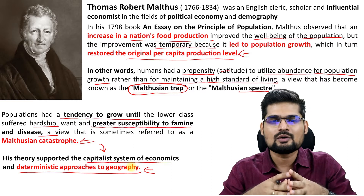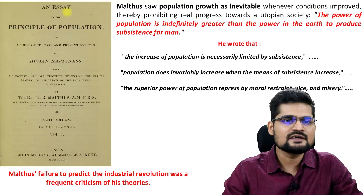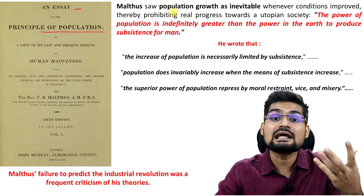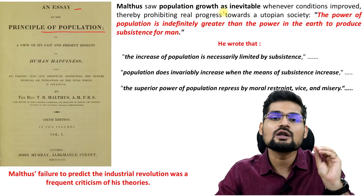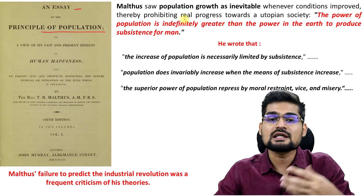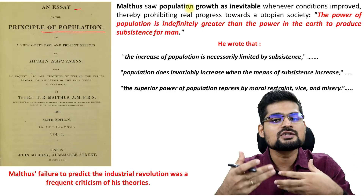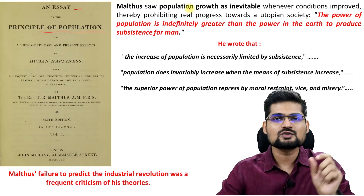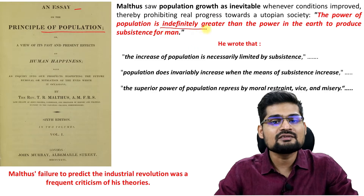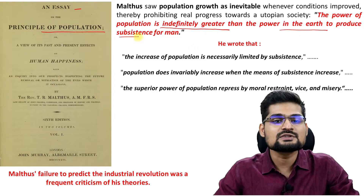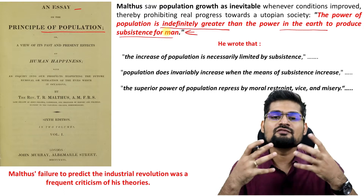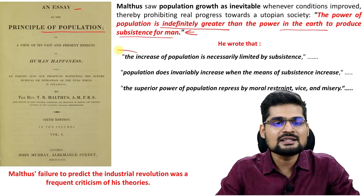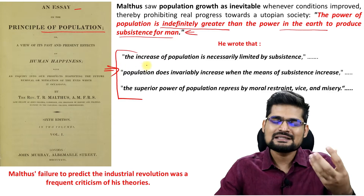Now let's elaborate on Malthusian theory. His book 'An Essay on the Principle of Population' talks about population growth as inevitable — whenever conditions are improved, people will increase in numbers automatically. His key statement: 'The power of population is indefinitely greater than the power of the earth to produce subsistence for man.' The first premise is that the increase of population is necessarily limited by subsistence.